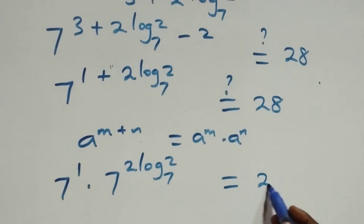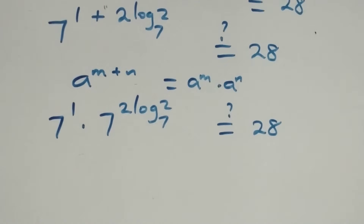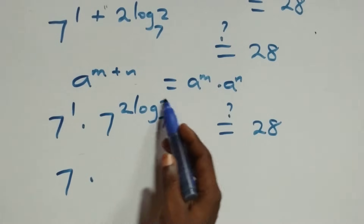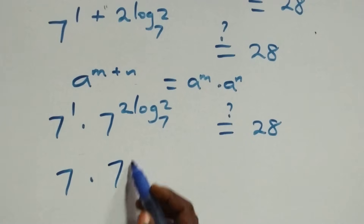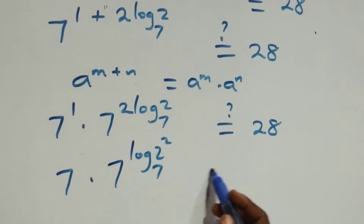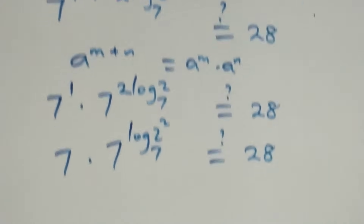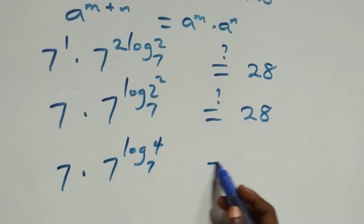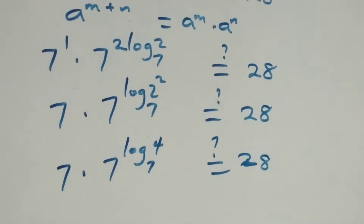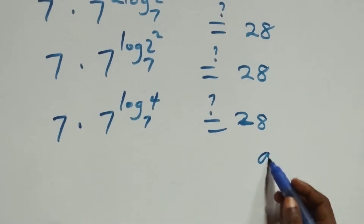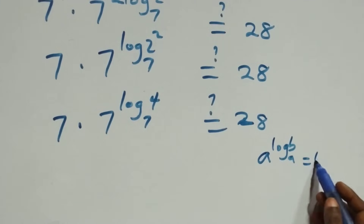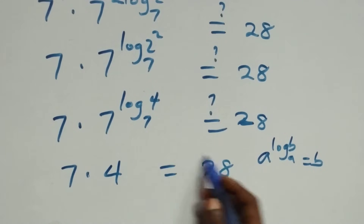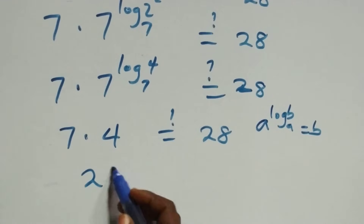This follows the law of logarithms: when we have a raised to power log b to base a, this is the same thing as b. So 7 raised to power log of 4 to base 7 equals 4. Therefore we have 7 times 4, which equals 28. And of course 7 times 4 gives us 28, which equals 28 on the right-hand side.